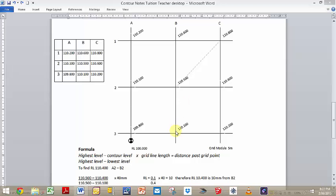When we do that calculation, 110.5 minus 110.4 is 0.1. When we do that calculation there, 110.5 minus 110.1 is 0.4. So we times it by the line length, that gives us 10 millimeters. Therefore, the RL 110.4 is 10 millimeters from B2 because B2 is the highest RL.